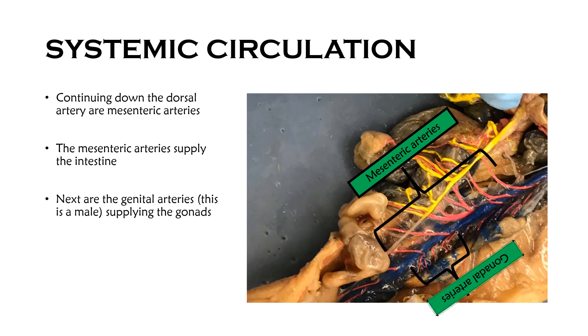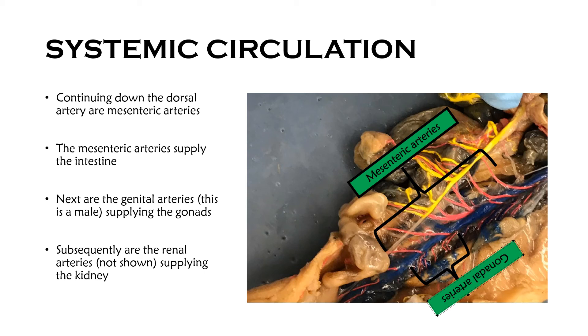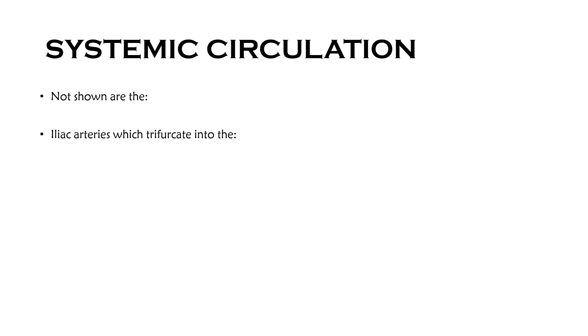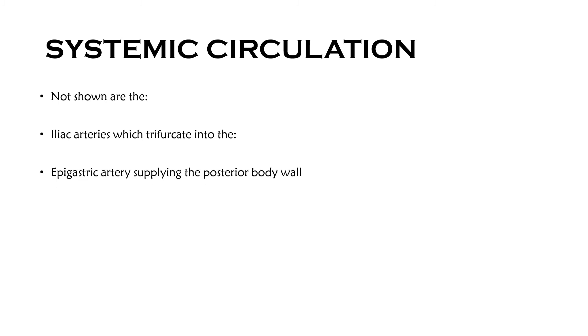The next arteries are the genital arteries. This particular mud puppy is a male, and they are supplying the testes — that gonad sitting sort of to the side, sort of blue and brown, is the testis of the male mud puppy. There are also renal arteries, not shown, supplying the kidney, because renal means of or related to the kidney. Some arteries not shown in this video but important to know are the iliac arteries, which trifurcate into the epigastric artery supplying the posterior body wall, the hypogastric supplying the urinary bladder and cloaca, and the femoral artery supplying the hind limb.